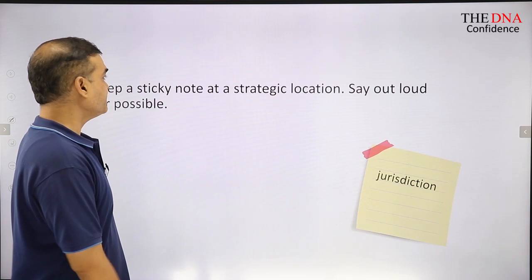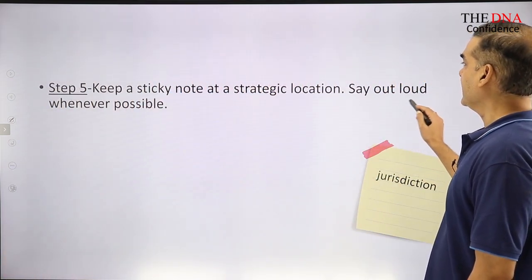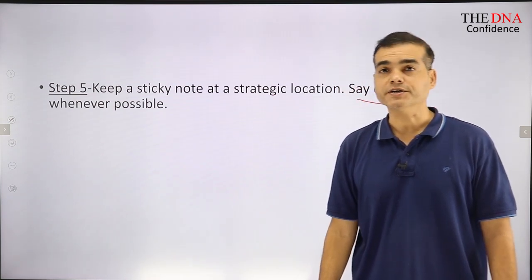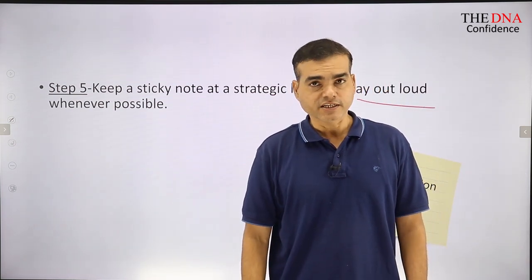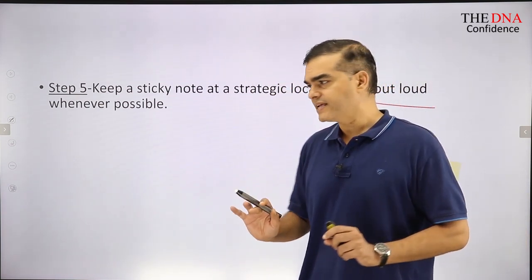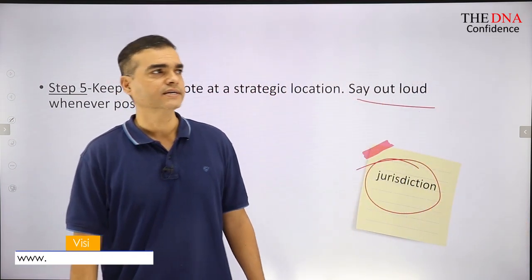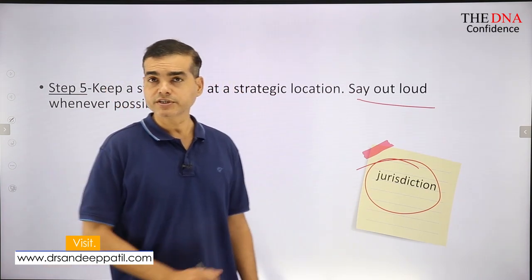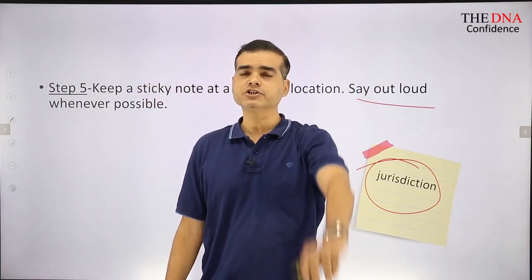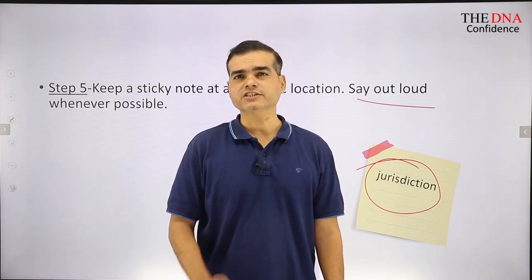The next step is: keep a sticky note at a strategic location and say it out loud whenever possible. There is no shortcut for this. Build that ritual, build that habit of making sticky notes. Write down the word — 'jurisdiction' — and whenever you see it, say it loudly: jurisdiction. Say it five to ten times. You can paste the sticky note in front of your mirror, in front of the fridge, wherever it is. Go and buy some sticky notes, paste them, write the word down, and see the magic of what happens.